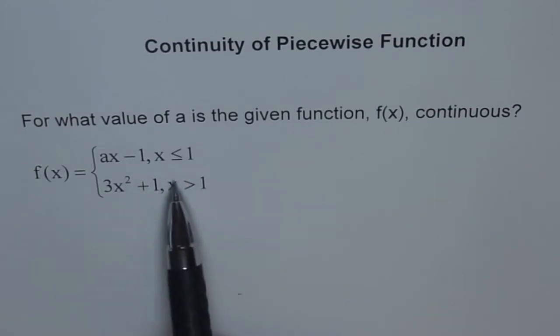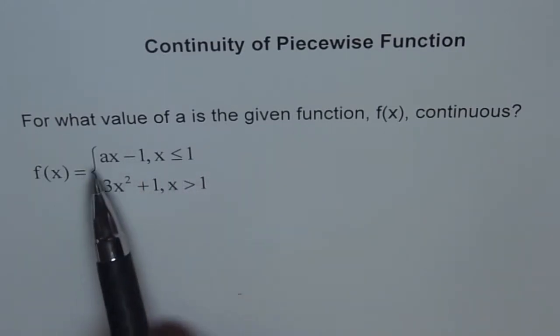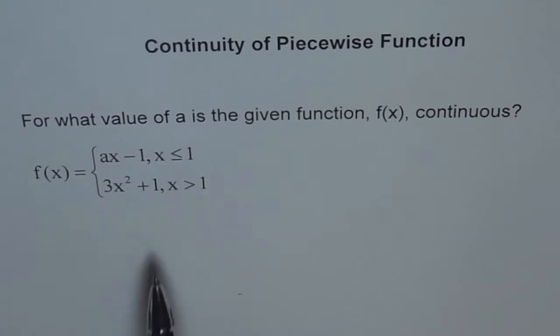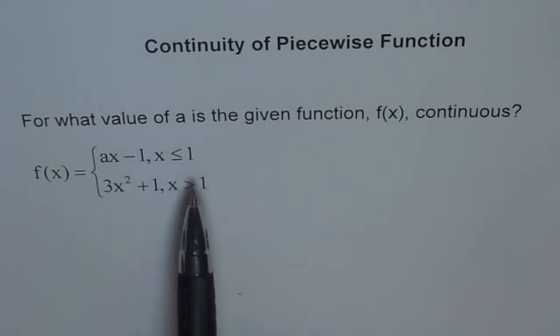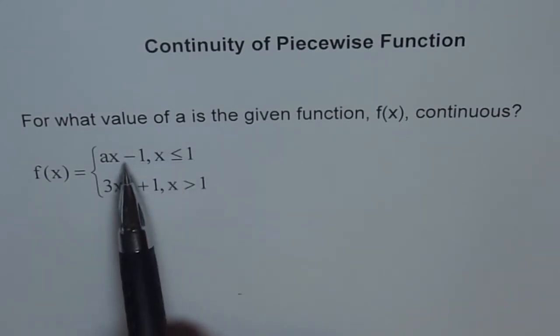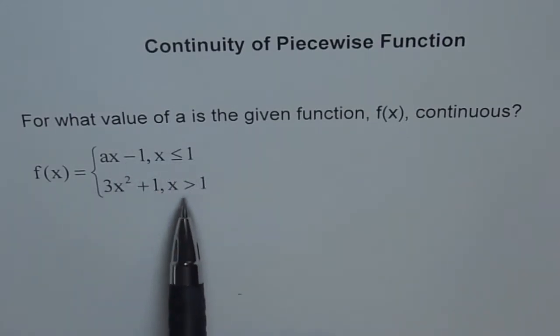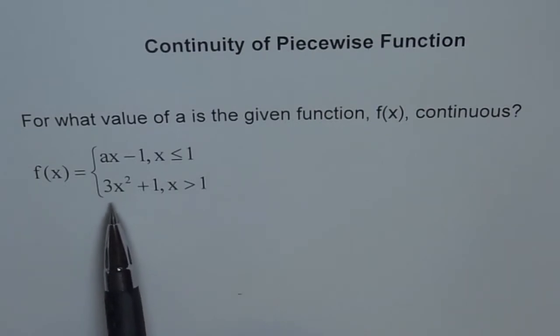It divides the whole domain into two regions: minus infinity to one, and from one to infinity. Individually, this is a linear function ax minus one, continuous throughout minus infinity to one including one. On the right side we have a parabola 3x squared plus one. Both are polynomials and individually continuous, so the only place this could be discontinuous is at one.